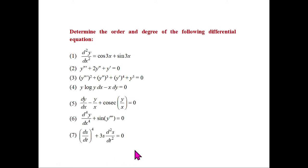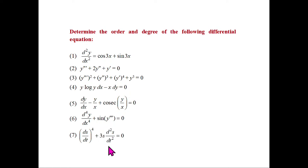Question 7 contains d²s/dt² and (ds/dt)⁴. The highest-order derivative is d²s/dt², so order = 2. The highest-order derivative d²s/dt² is raised to power 1, giving degree = 1. Order is always defined regardless of polynomial form; degree is only defined when derivatives form a polynomial equation.